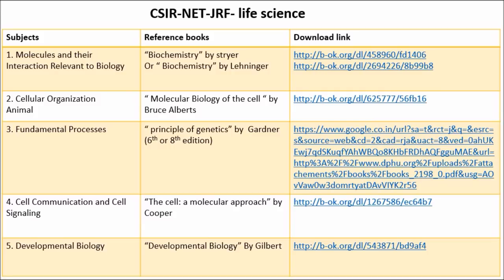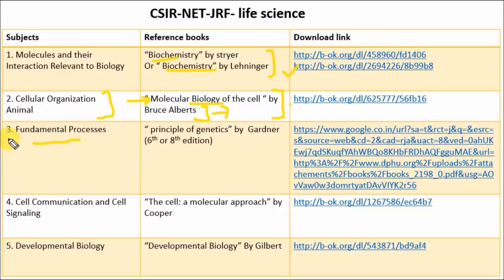The first chapter is Molecular Interactions Relevant to Biology. For this unit you have to study Biochemistry by Stryer or Biochemistry by Lehninger — you can download these books from the provided links. The second unit is Cellular Organization; the reference book is Molecular Biology of the Cell, which also covers Fundamental Processes and Cell Biology. The third unit is Fundamental Processes — refer Principles of Genetics by Gardner. The fourth chapter is Cell Communication and Cell Signaling — refer The Cell: A Molecular Approach by Cooper, downloadable from the provided link.